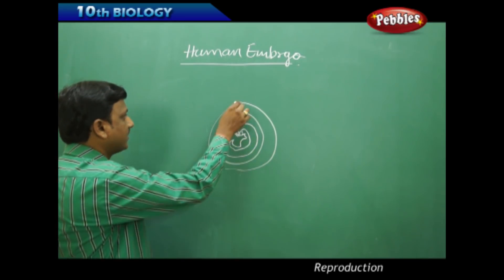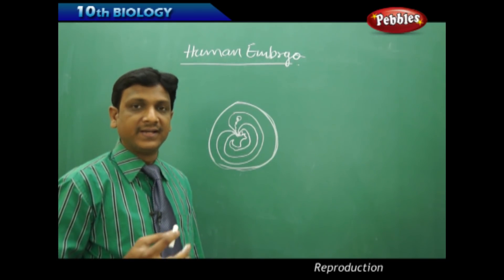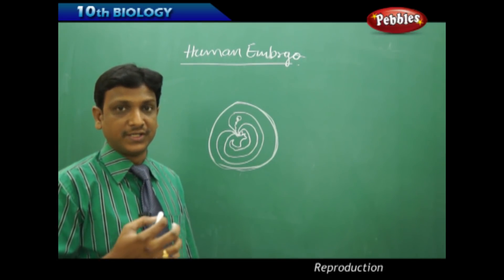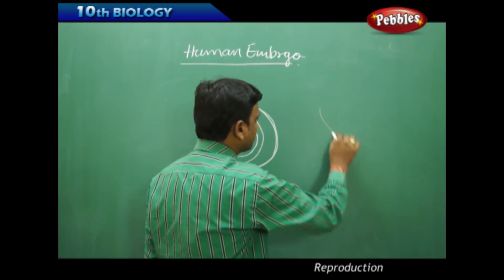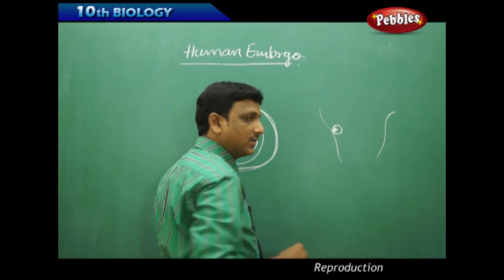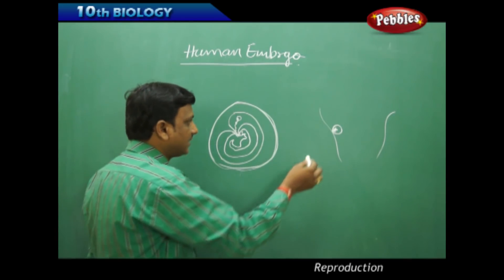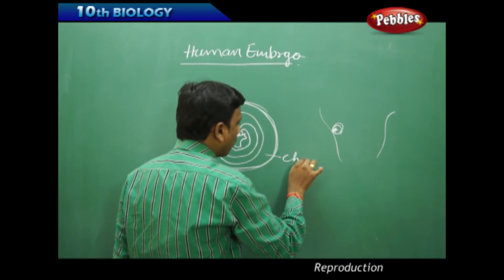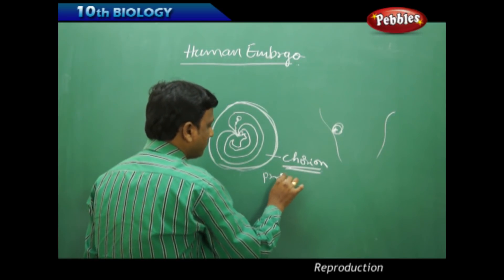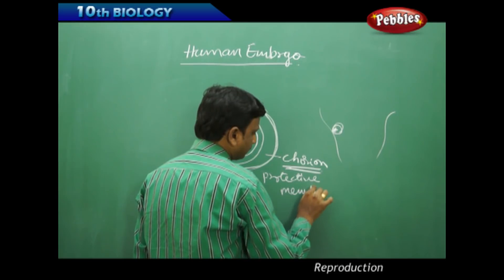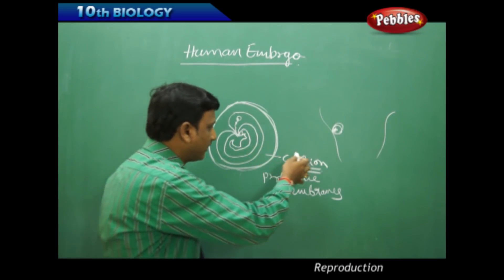Now let us understand the development of the human embryo. Once fertilization takes place, the zygote divides — cell division takes place — and it gets a sufficient number of cells. These cells differentiate into different parts and layers. Once implantation takes place in the uterus wall, the embryo slowly sinks into the uterine tissues and forms an outer layer called chorion. Protective membranes are developed from the cells of the embryo to nourish and protect it.